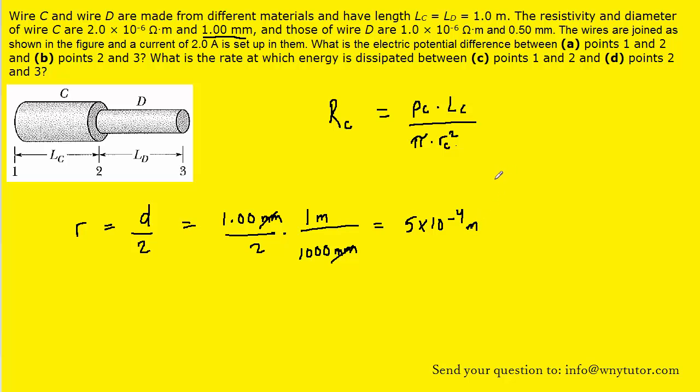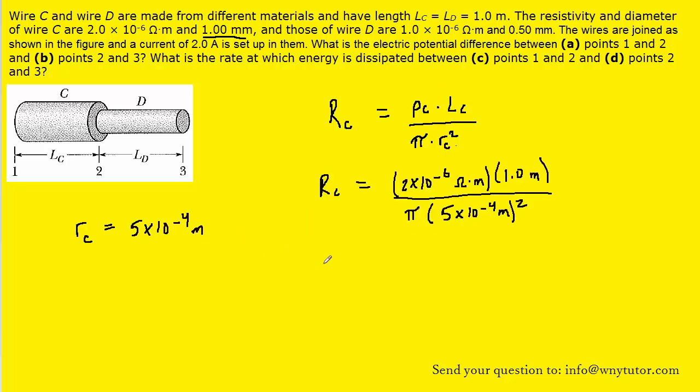So with all that information, we can go ahead and plug in to find the resistance of wire C. And when we work that out on our calculators, we get about 2.55. And let's take a look at the unit.